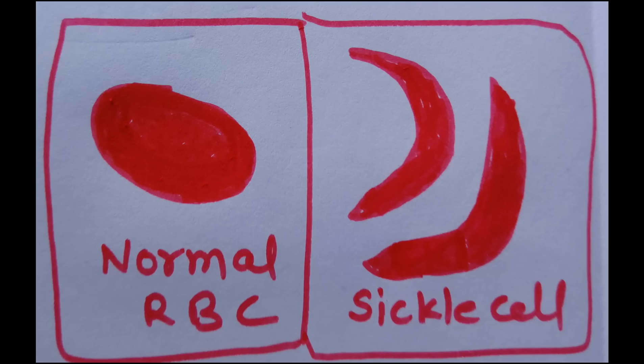As shown in the diagram, you can see the normal shape of red blood corpuscles and due to lack of oxygen supply, the normal RBC becomes sickle shaped.